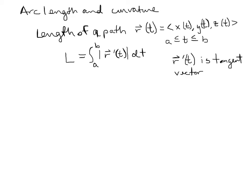If we do this over something really small and make each tangent vector really tiny, we'd be adding up over the curve. Here's a curve — take a little tiny vector, find its length; here's the next one, find its length; here's the next tangent vector, find its length; and so on, starting at A and ending at B.